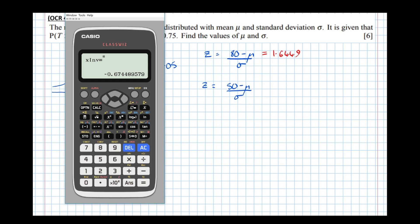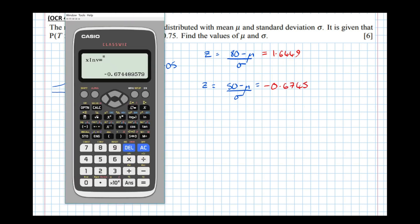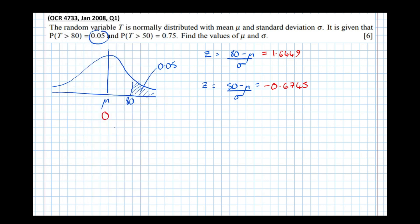So minus 0.6745 equals the z value for the second boundary. Now we've got two simultaneous equations in mu and sigma. Let's rearrange them into a form our calculator can solve, calling them equation A and equation B.